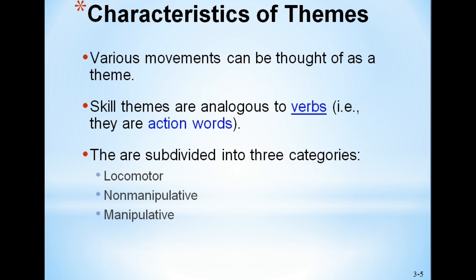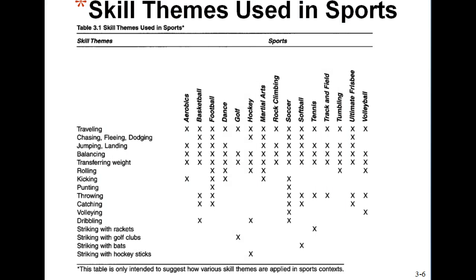Any fundamental physical skill or movement needed for a sport or activity would be considered a skill theme if it is a verb. They are subdivided into three categories: locomotor movements — things like traveling, running, skipping, jogging, leaping; non-manipulative; and manipulative skills. This table in your textbook is helpful for looking at how skill themes are used in sports. For example, a softball player chases, flees, and dodges, travels, jumps and lands, transfers weight, and throws and catches.